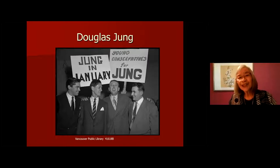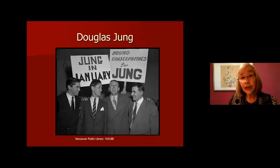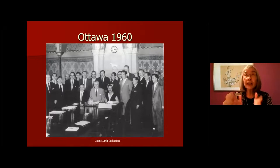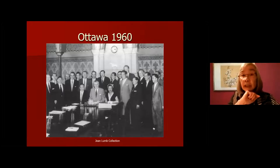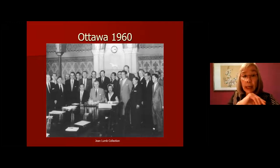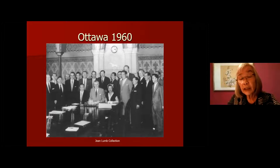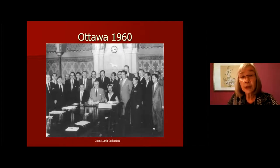With the right to vote, Chinese could now run for public office. This is a picture of Douglas Jung, the first Chinese-Canadian to run successfully for politics — a Member of Parliament for Vancouver. With the right to vote, Chinese were also now allowed to enter professions right across Canada — medicine, law, pharmacy, and so on. However, even though the exclusionary law was repealed in 1947, it took another 20 years until 1967 before all the clauses that hindered family reunification for Chinese families were fully removed.